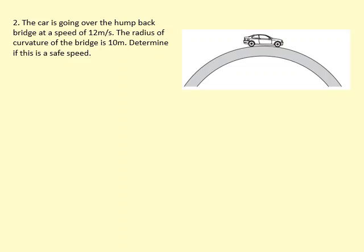This car is going around over a humpback bridge at a speed of 12 meters per second. The radius of curvature of the bridge is 10 meters. So that means from the center of mass to the center of this circle is 12 meters.